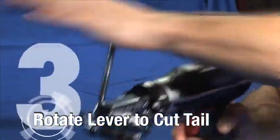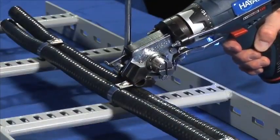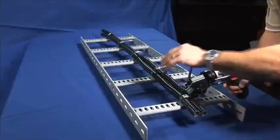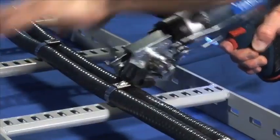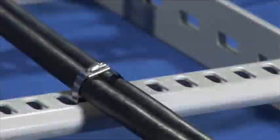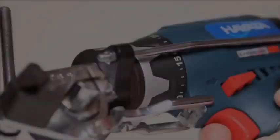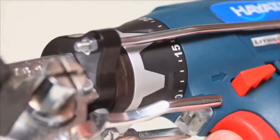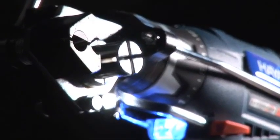Third, rotate the lever to cut the tail of the cable tie. Don't worry about jagged edges, the BT12000 cuts smoothly and close to the head every time. In addition, the adjustable torque allows for uniform cable tie installation without risk of damaging cable jackets.